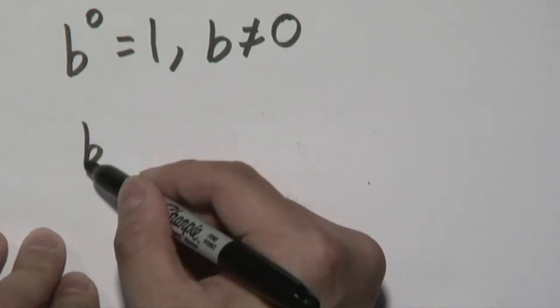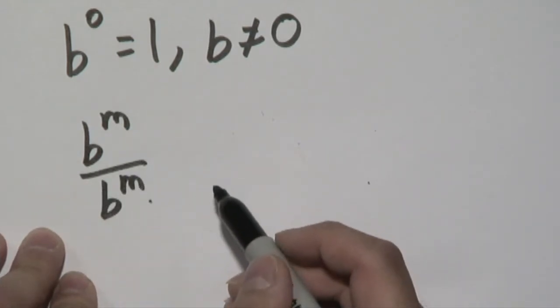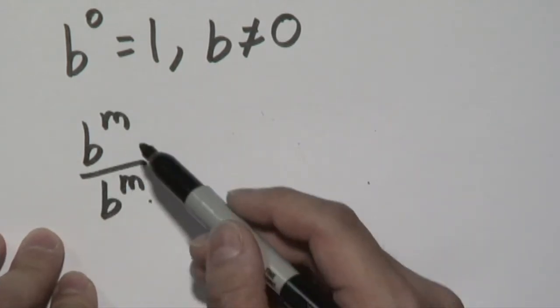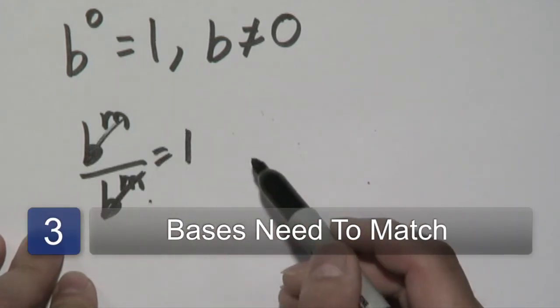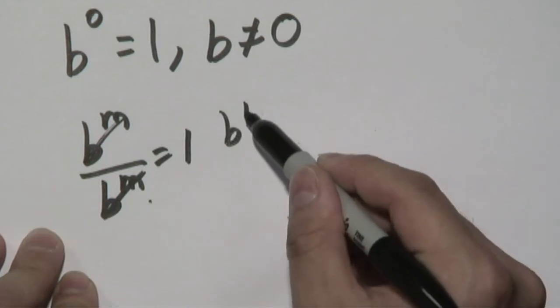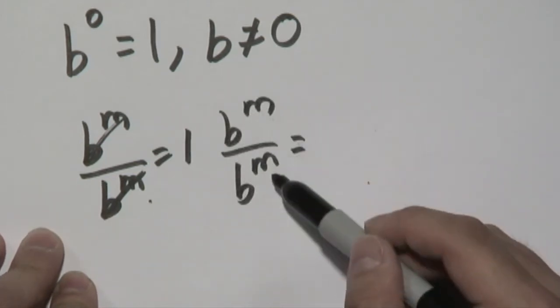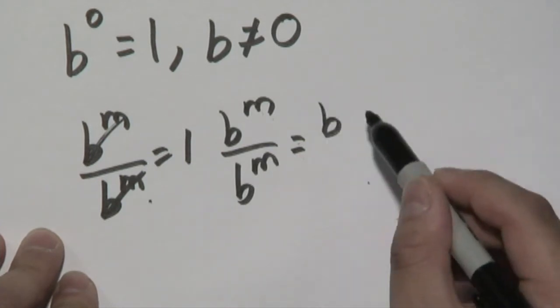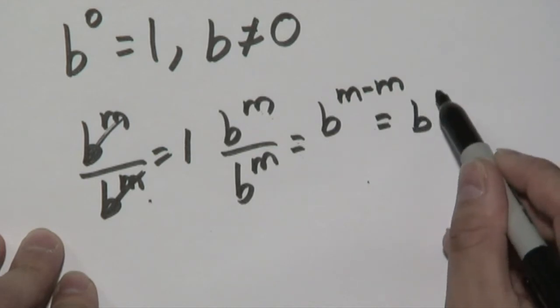Now how does this become one? Now you may have seen this particular rule here, b to the m over b to the m, you know that if the terms exactly match, you get one. But you also may know this rule where if you have b to the m over b to the m, you will have to subtract the exponents, and as you know that's b to the zero.